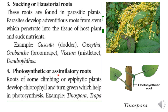Next, Photosynthetic or Assimilatory Roots. In some climbing or epiphytic plants, the roots are green in color. For example, in the Tinospora plant, the roots are green and contain chlorophyll pigments, making them photosynthetic roots. Trapa (water chestnut) is another example of photosynthetic roots.